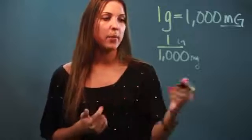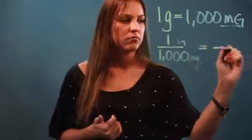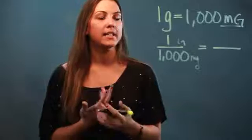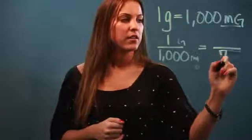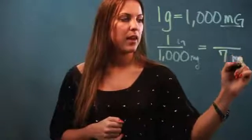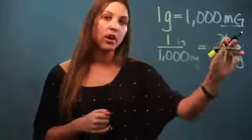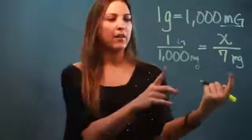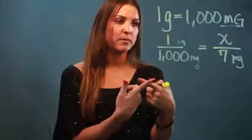And now what I can do is I can set up a proportion to find out how much, let's say, seven milligrams are. So if I have seven milligrams and I want to know what part of a gram that is, I have a proportion and I'm going to solve it by cross-multiplying.